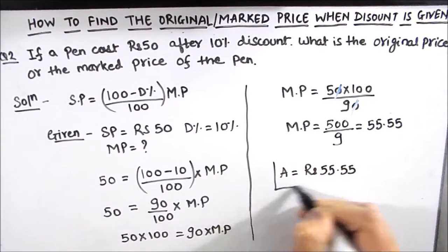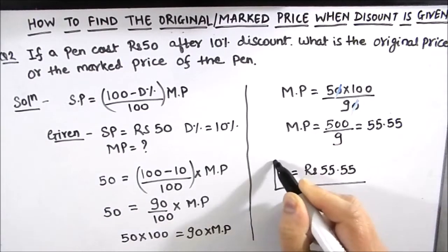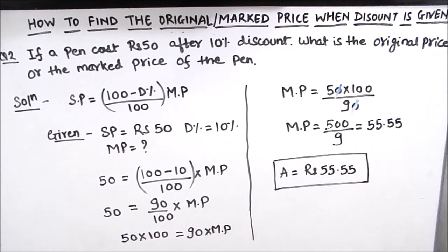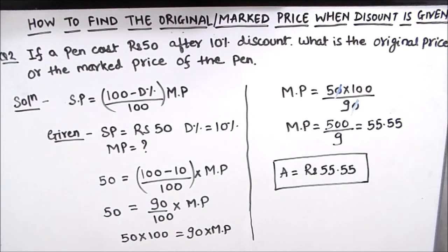This is how you can find the marked price or the original price of a commodity when the discount percentage is given. I hope this video is helpful to you. If you like the video, please hit the like button and subscribe to my channel for more math videos. Thanks for watching.